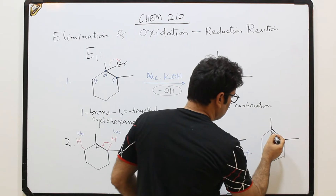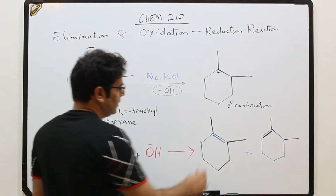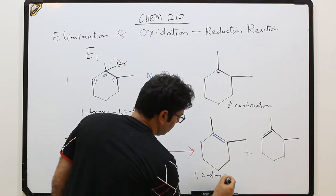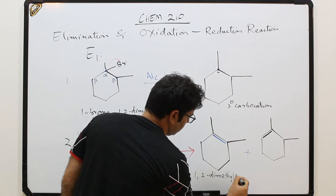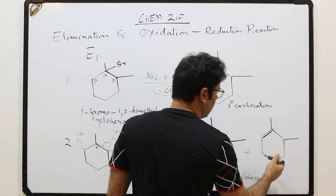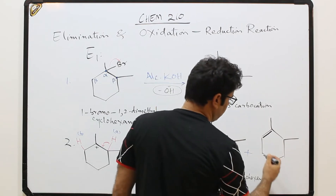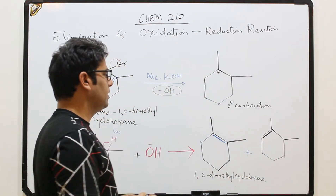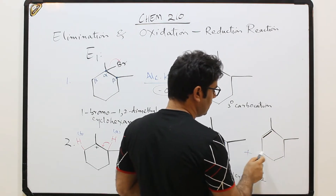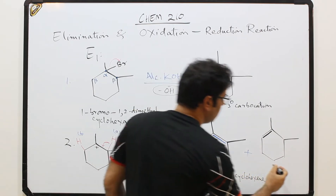Looking at the products: if the double bond forms one way, the name is 1,2-dimethylcyclohexene. The other possibility also gives 1,2-dimethylcyclohexene, but numbered differently — that would be 1,6-dimethylcyclohexene. That one is the minor product.